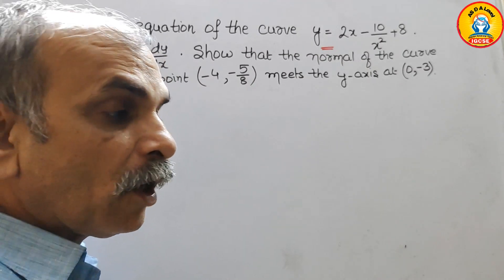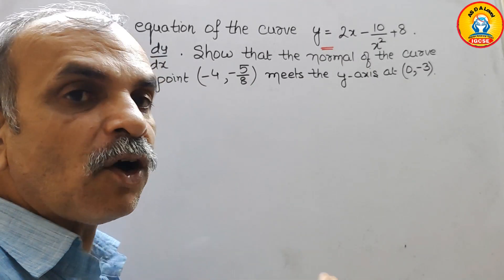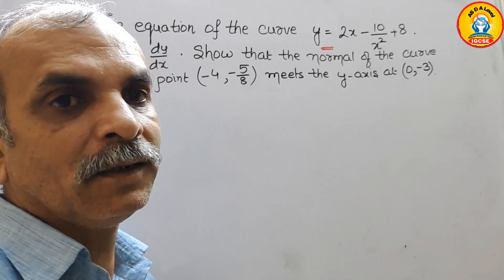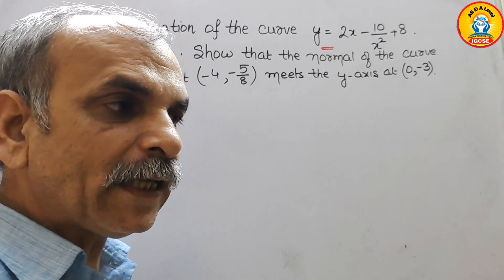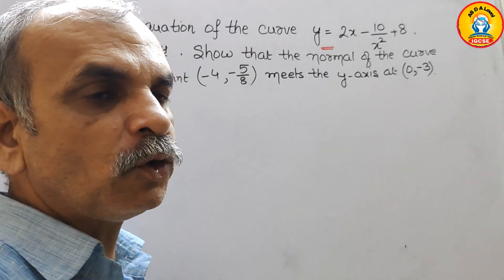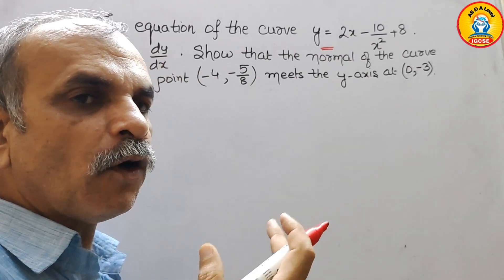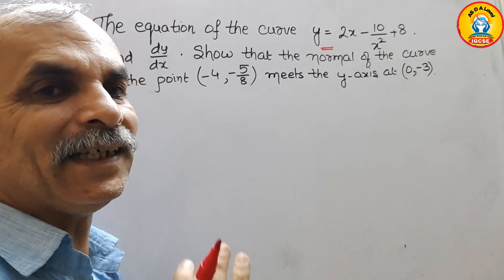First, we have to find out the equation of a normal. For that, we have to go for dy by dx.